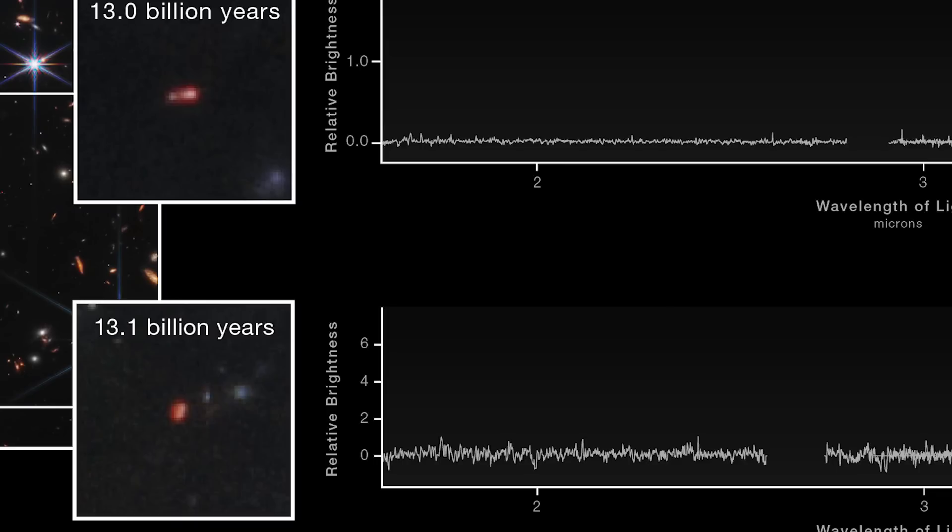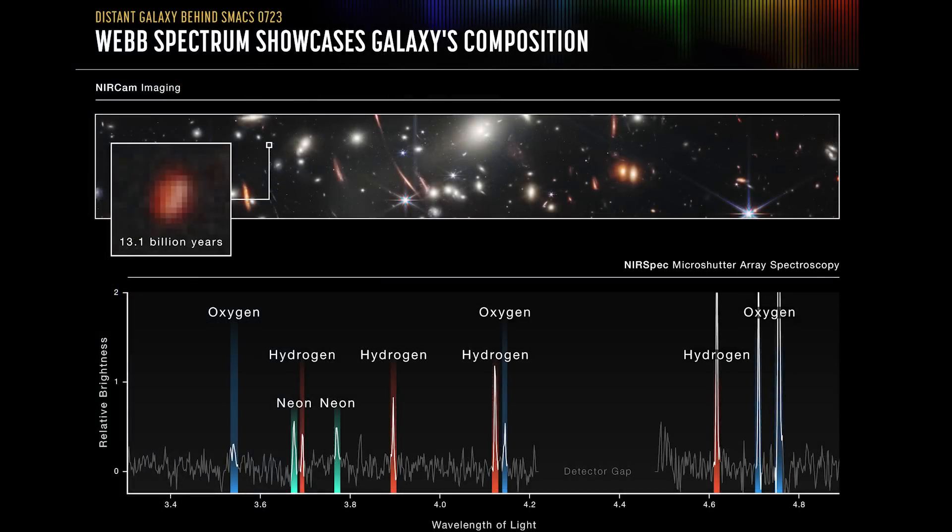The final spectra we saw was a more detailed breakdown of this most distant one. At an age of over 13 billion years and a redshift of 8.5, it's one of the most distant spectra we've ever seen. Of course, Webb will smash that record again and again, very quickly.